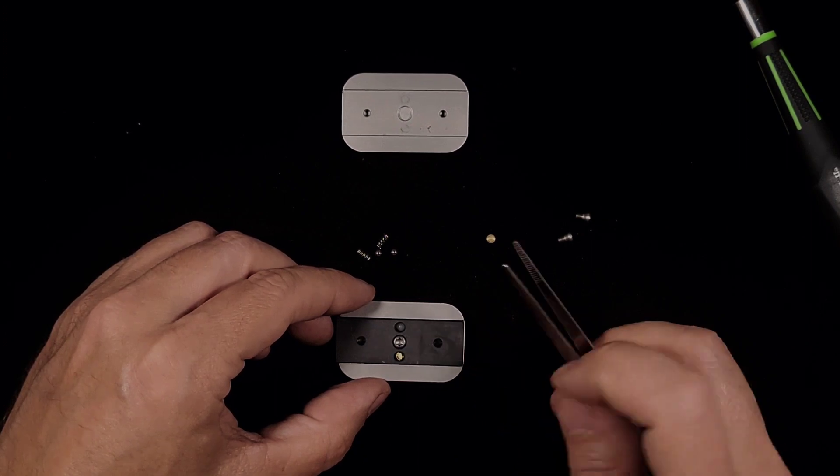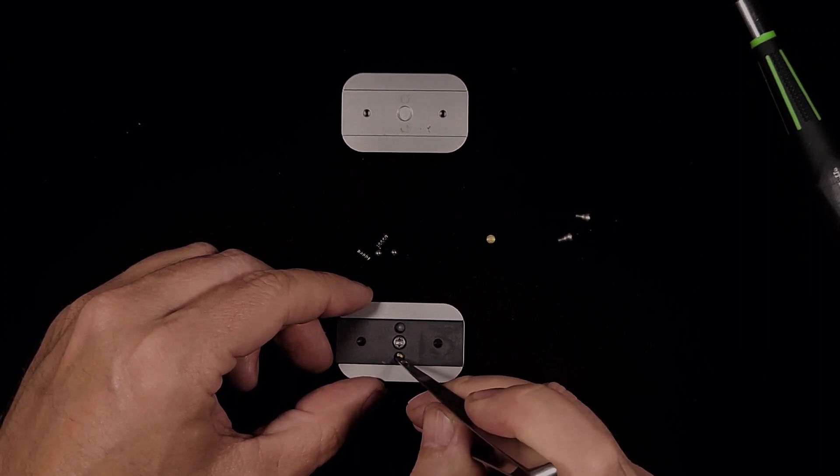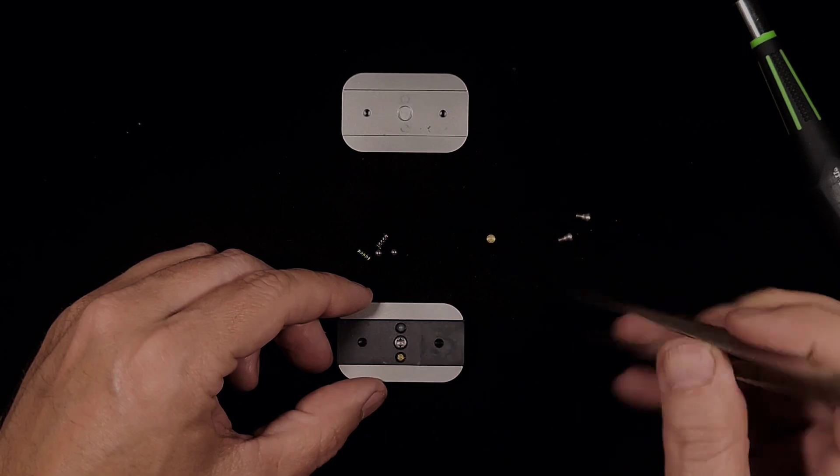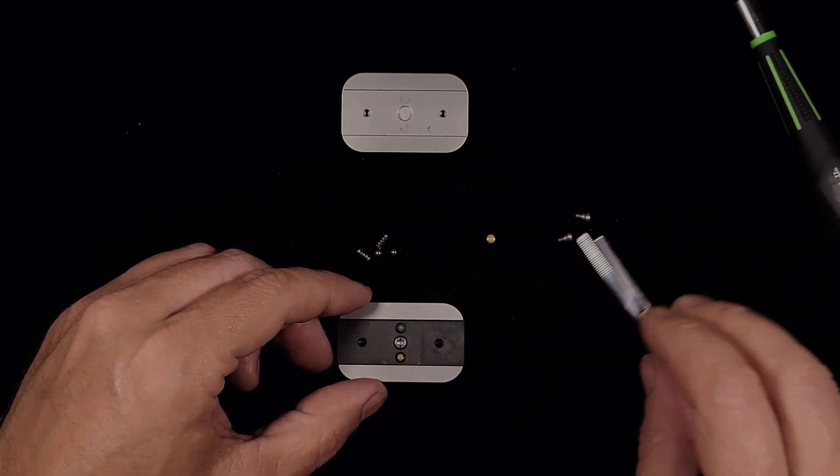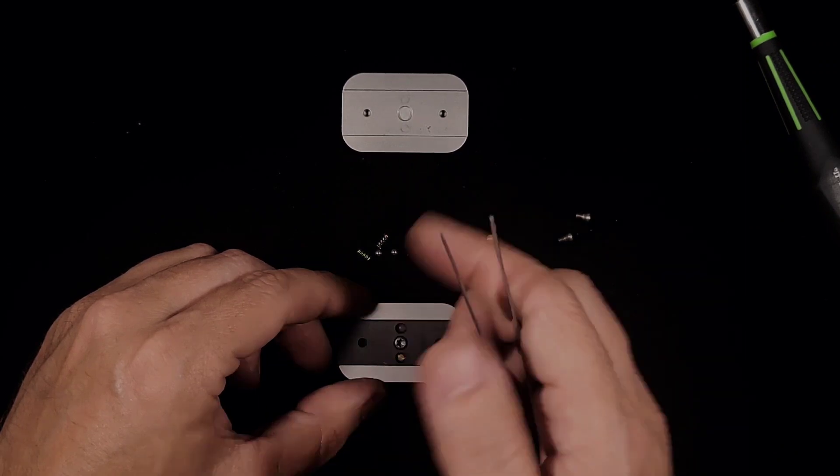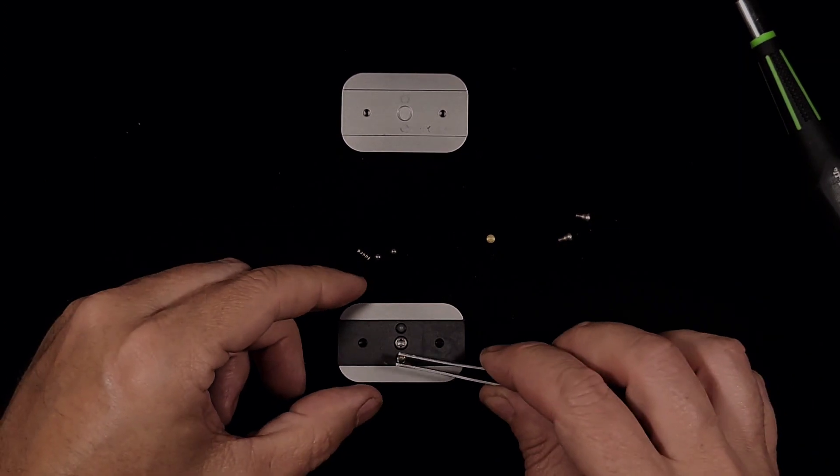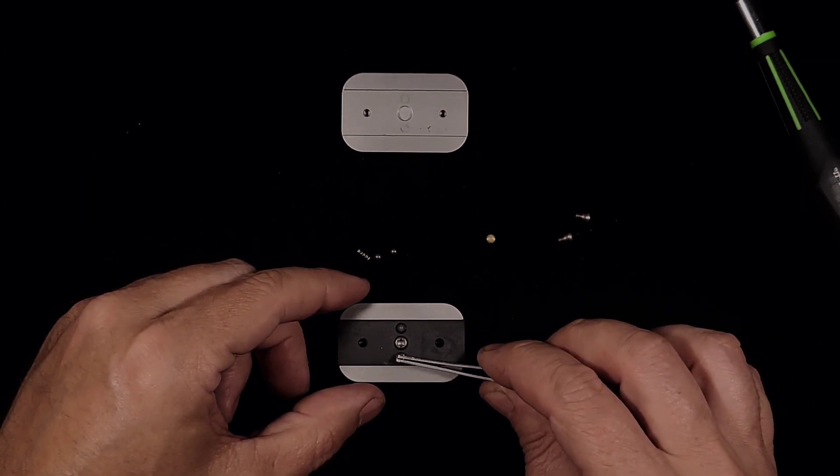They have to go in upside down because they're cupped on one side and they've got that little post part that sticks up that sits inside the spring. Once you drop it down in there, you have to use something like this to adjust it and get it all lined up in the center.